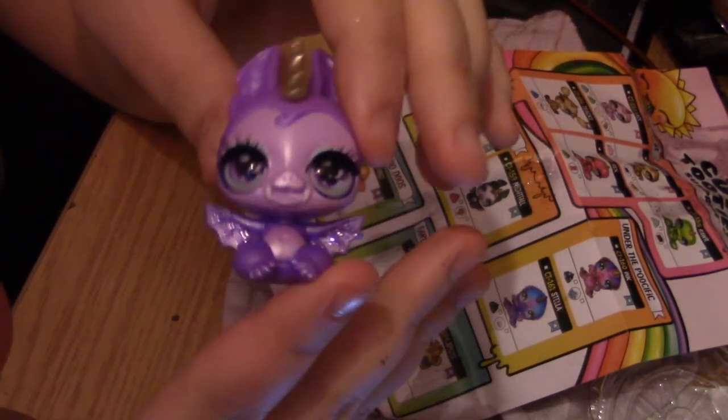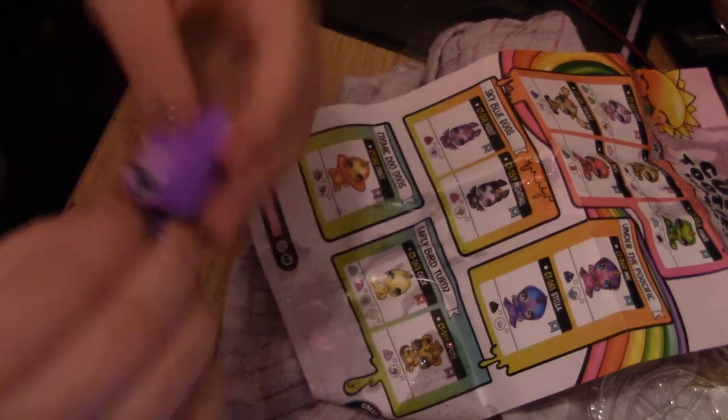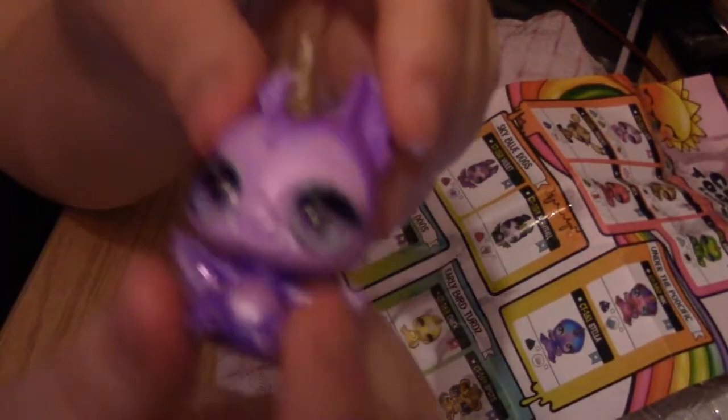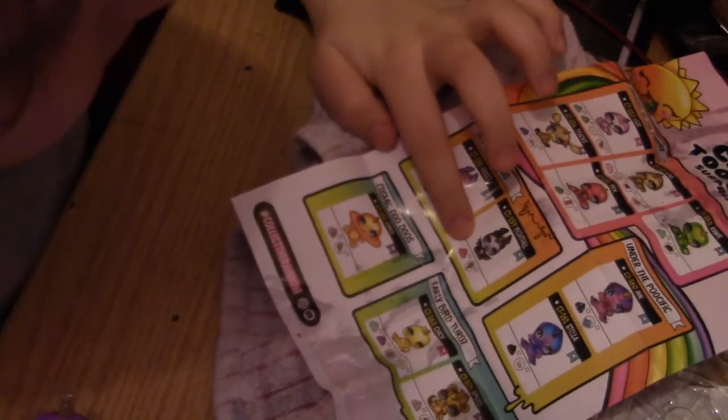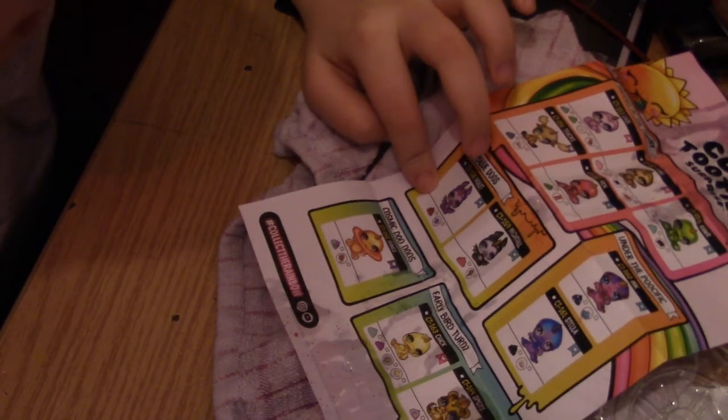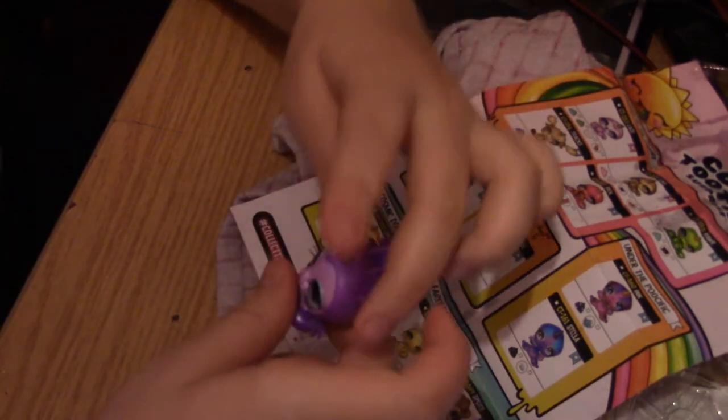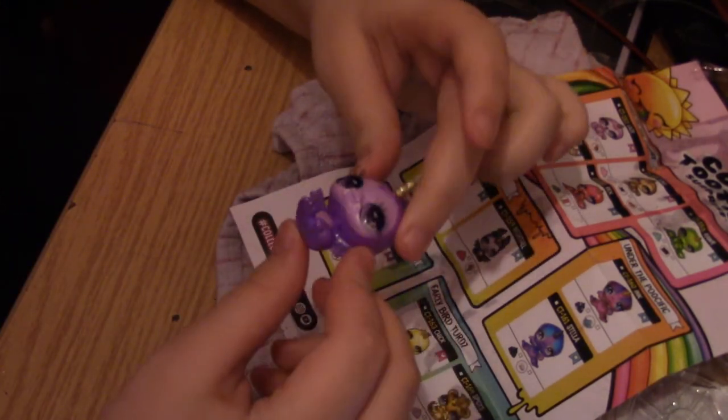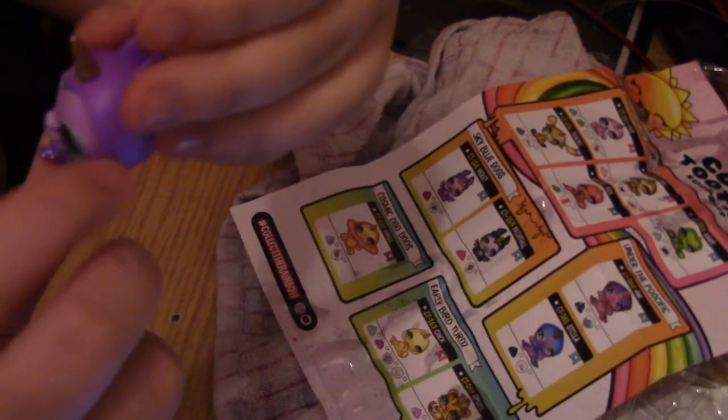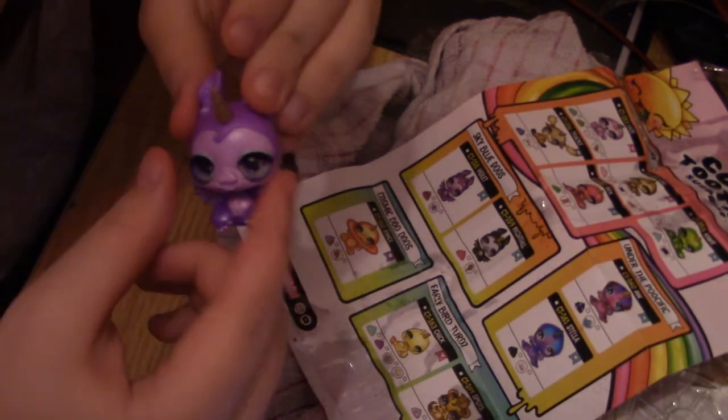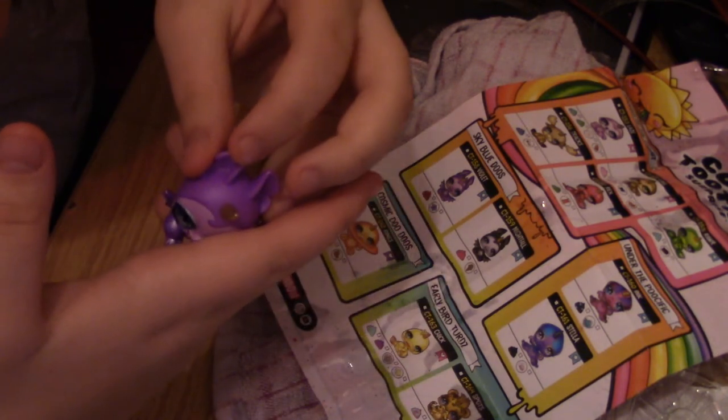I wish we had Nightfall as well so they could be a little duo. Look at those tiny little feet. And the eyelashes, girl. Me and this Violet bat have something in common. Love my eyelashes.